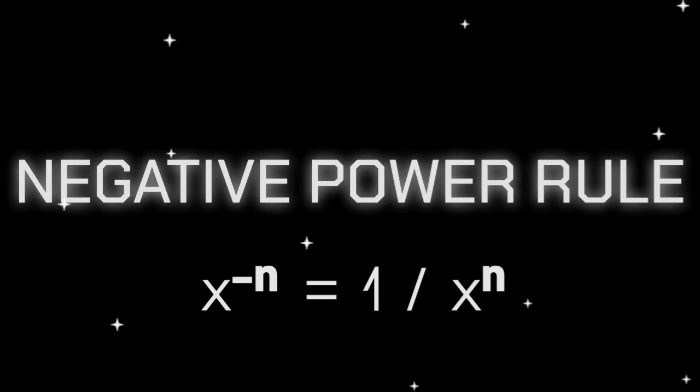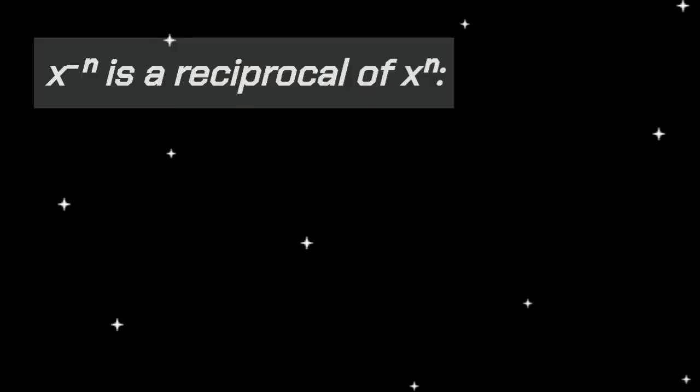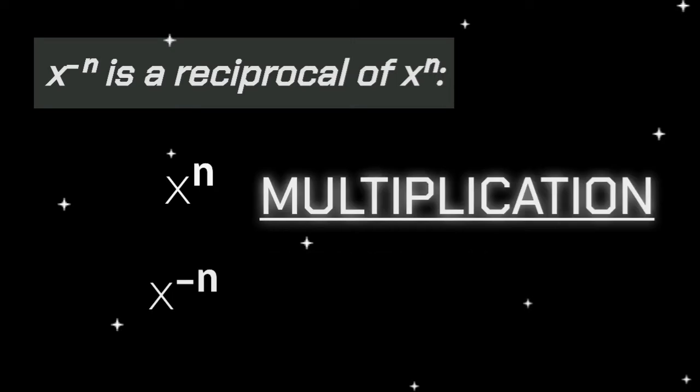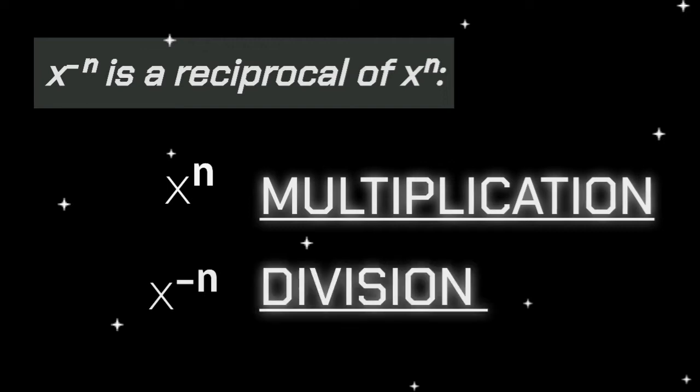To elaborate, x raised to the power of negative n is a reciprocal of x raised to the power of n. Whereas x raised to the power of positive n means to increase, and x raised to the power of negative n means decrease. In other terms, x raised to the power of positive n means multiplication, and x raised to the power of negative n means division.